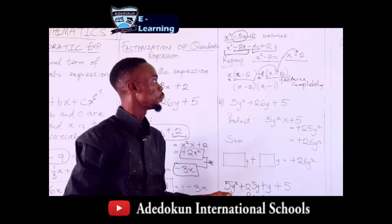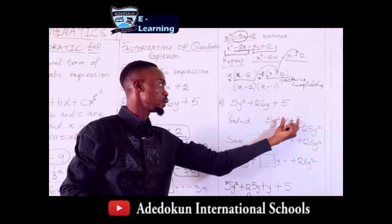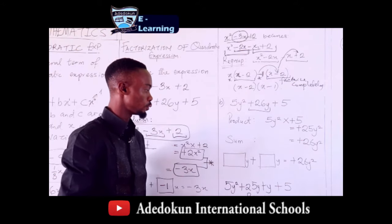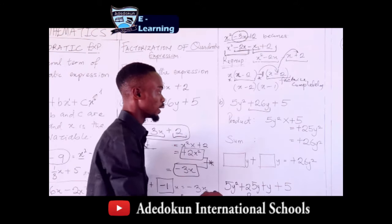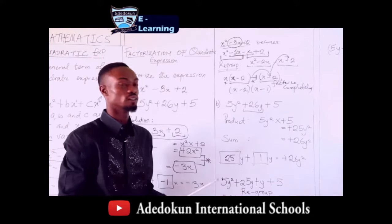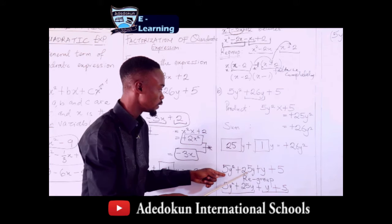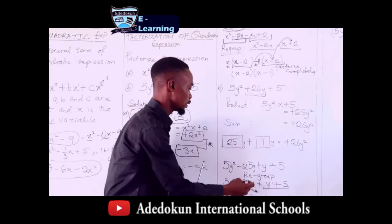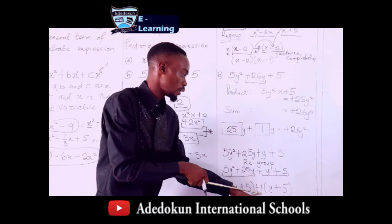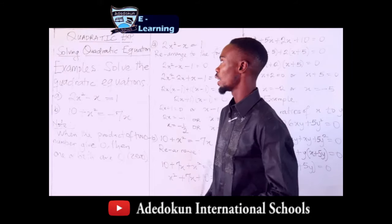Let's go to the second example: 5y² + 26y + 5. The product is the order two term times the order zero term: 5y² times 5 gives 25y². The sum is the middle term, 26y. Thinking through two numbers: 25 times 1 gives 25 and 25 plus 1 gives 26 — so the two numbers are 25 and 1. Split 26y into 25y and y, regroup, factorize 5y from the first two terms leaving y plus 5, factorize 1 from the last two terms leaving y plus 5, and the final factorized result is (5y + 1)(y + 5).